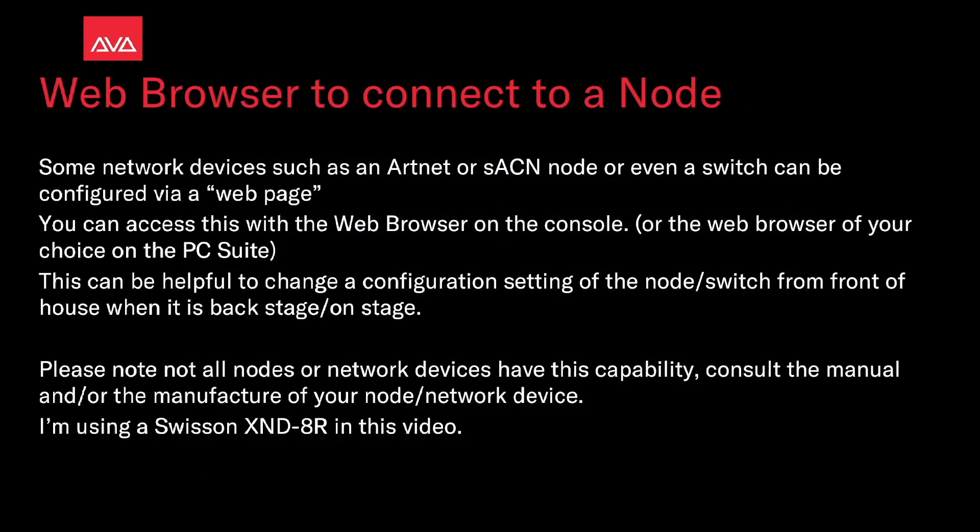Subnet devices such as an ArtNet or Simulation node or even a switch can be configured via a web page. You can access this with the web browser on the console or the web browser of your choice on the PC suite. This is helpful to change the configuration settings of the node or switch from front of house when it is backstage or on stage. Please note that not all nodes or network devices have this capability — consult the manual and/or manufacturer of your node or network device.